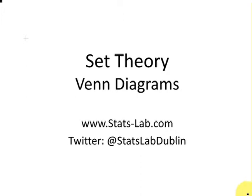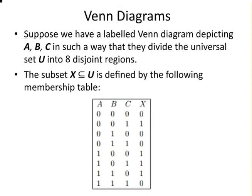In this presentation, we are going to look at using Venn diagrams in set theory. The question is as follows. It's a short question. Suppose we have a labelled Venn diagram depicting the events A, B, and C in such a way that they divide the universal set into eight regions.